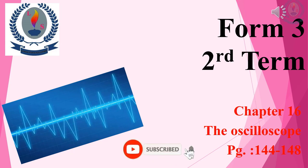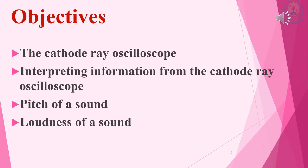Form 3, second term, chapter 16: The Oscilloscope, pages 144 to 148. At the end of this lesson, students will be able to know about the cathode ray oscilloscope, interpreting information from the cathode ray oscilloscope, pitch of a sound, and loudness of a sound.